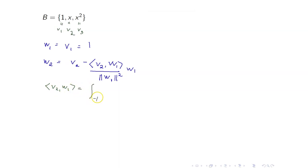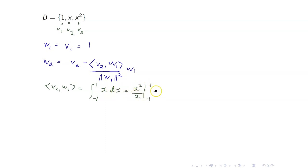The inner product of V2 and W1 is the integral from negative 1 to 1 of x times 1, which equals 0. Since this is equal to 0, we no longer have to compute that term, so W2 is just equal to V2, which is x.